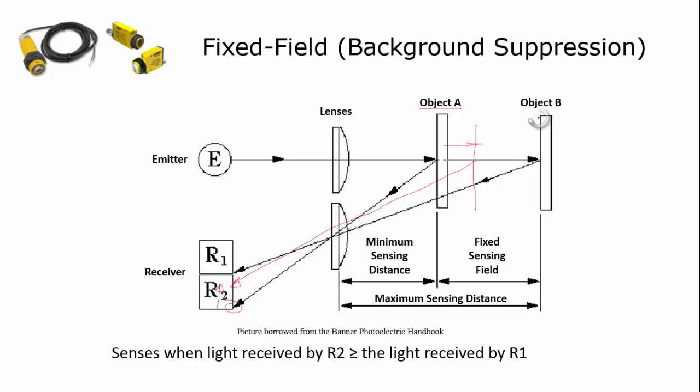Now the object is out here. The light coming back is right here. R2 is still receiving more light than R1. But now if this object moves out here, the light coming back off of this is now going to be striking R1.